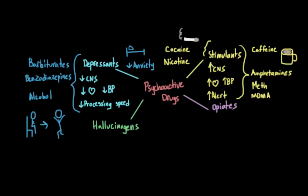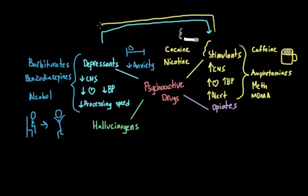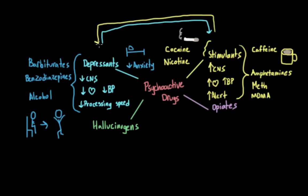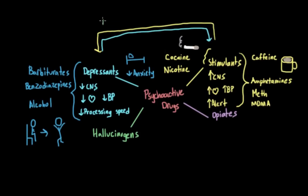One thing I want to point out before moving on is that while depressants and stimulants are functionally opposites, they don't necessarily work on the same things on a neurochemical level. This is one of the reasons why you can't take one to counter the effects of the other. Drinking coffee after having a lot of alcohol won't actually sober you up — it will just make you a more alert drunk person.